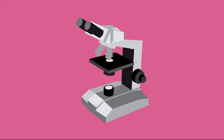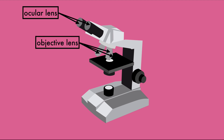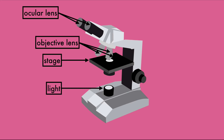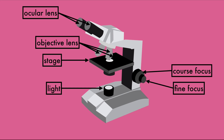There are some basic parts that most microscopes have that are useful to know. There's an ocular lens, possibly two, which will have a magnifying lens in it. The objective lens, or lenses, will also have magnifying lenses in them. The stage is where you place your specimen. There's usually a light source, a coarse focus knob, and possibly even a fine focus knob. And then there's the base and the arm, which you want to hold firmly when you carry the microscope.